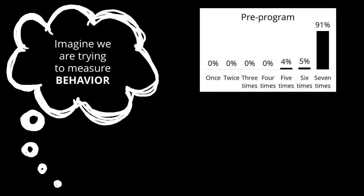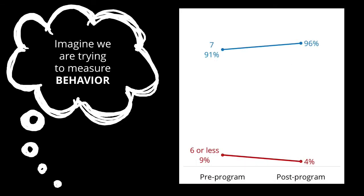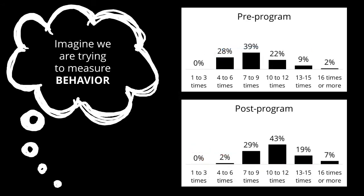Let's do another example. Imagine we have a program or exhibit with the goal of getting people to brush their teeth every day. We create an instrument to measure whether or not that's happening. Most of our sample already brushes their teeth every day — not much room for improvement, right? Wrong. Again, the issue is that our instrument is not sensitive enough to separate groups of people, so when we look at the post-test and compare, we can't really see much of a difference. Did our program or exhibit have an effect? It's really hard to tell.